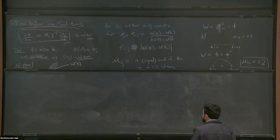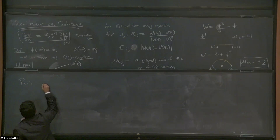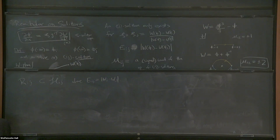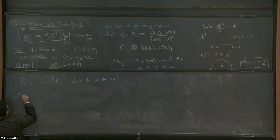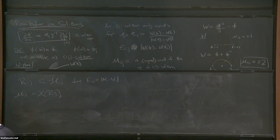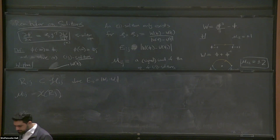Let me refine the BPS discussion. Consider R_{ij} to be the BPS subspace of the Hilbert space in the ij sector where the BPS bound is saturated. This is the object you want to study — the Witten index is just its Euler characteristic. The question I'm going to ask is: can I describe how the BPS Hilbert spaces jump across a wall of marginal stability? This is what I call categorical wall crossing.